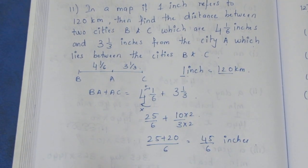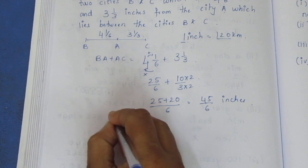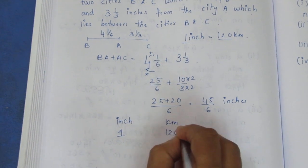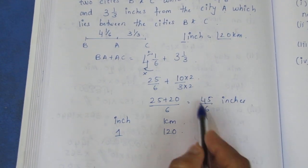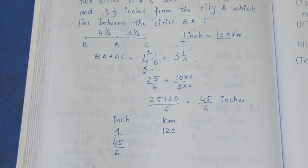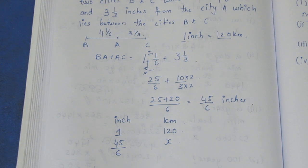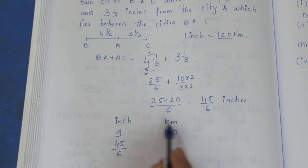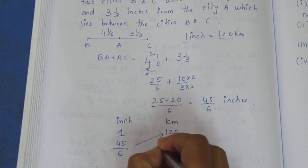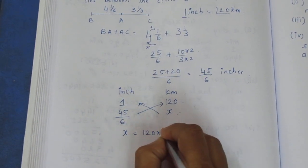We need to convert inches to kilometers. We know 1 inch equals 120 kilometers and we have 45/6 inches. Using cross multiplication: x is equal to 120 into 45/6.